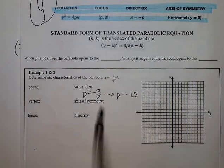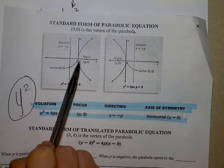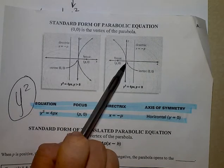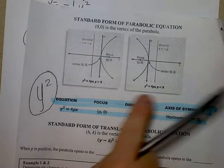So with a y squared problem, our problem either opens to the right or it opens to the left. Because p is a negative value, it opens to the left.